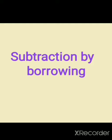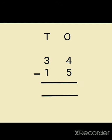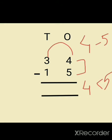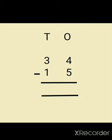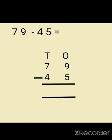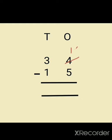Now we will see how to do subtraction by borrowing. We have thirty four minus fifteen. Starting from the right hand side, four minus five — we see that four is less than five, so we can't subtract five from four. So we will take one borrow from three. After borrowing, four becomes fourteen and three becomes two.